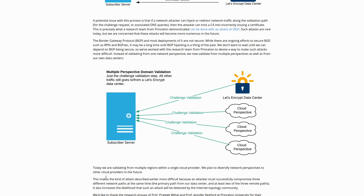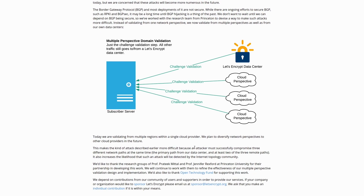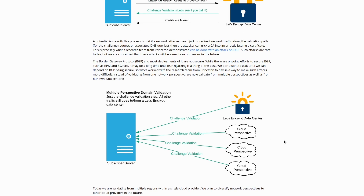This makes the attack more difficult because the attacker must successfully compromise three different network paths at the same time. Your average script kiddie isn't going to be doing this — it requires quite a bit more resources to basically DDoS these different servers. One potential problem is that if validation to those cloud perspectives fails, Let's Encrypt will exclude that particular server for a period of time.